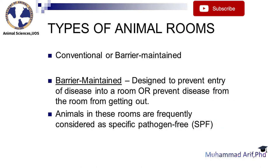Types of animal rooms include conventional or barrier maintained. Barrier maintained rooms are designed to prevent entry of disease into a room or prevent disease from the room from getting out. Animals in these rooms are frequently considered specific pathogen free, or SPF.